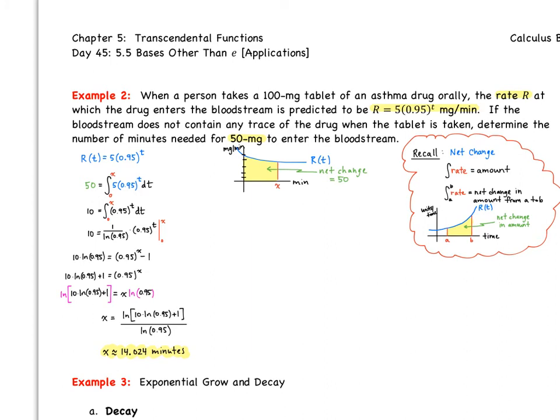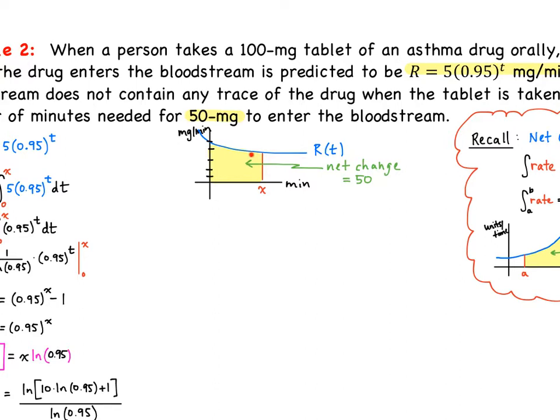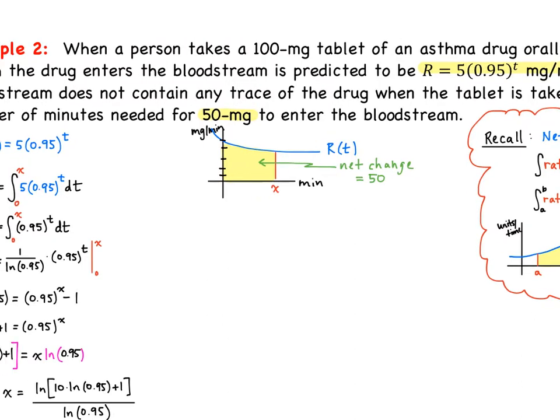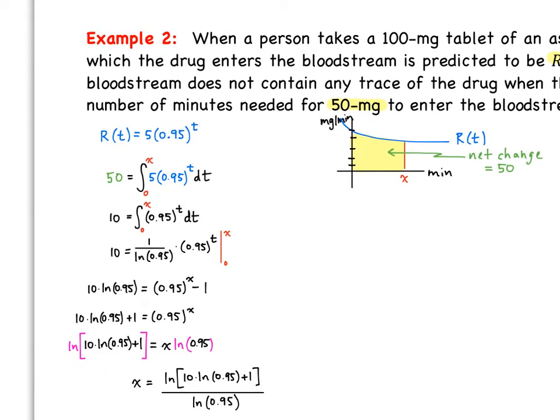It tells us that the number of minutes needed for 50 milligrams to enter the bloodstream. So I want that net change to be 50 in our case. We're looking at this graph here, where this blue curve represents our R of T, and the area under the curve represents our net change. We want to figure out how much time it takes to get there. We are given R of T equals 5 times 0.95 to the T. We want to take the integral of that from 0 to X, because we want to figure out the time it takes of that rate, and we know that it equals 50.